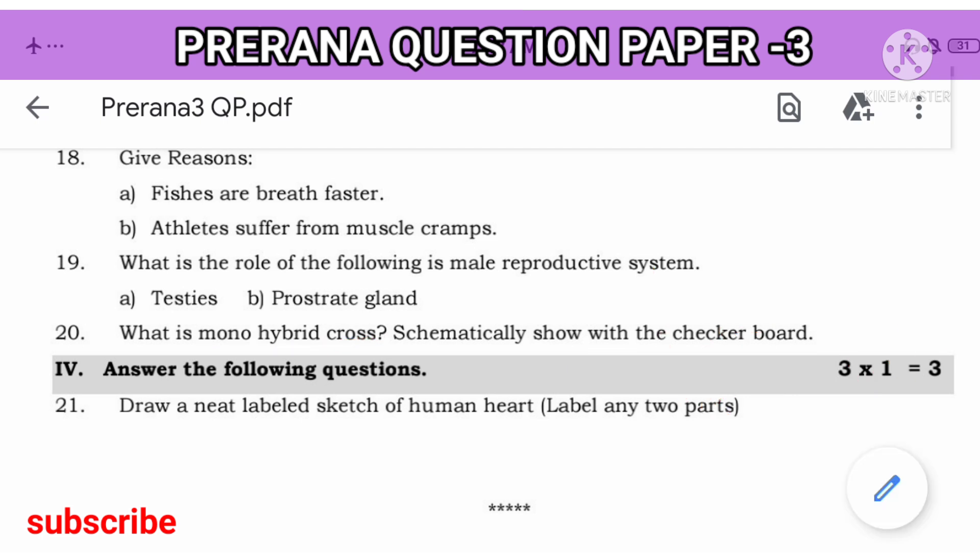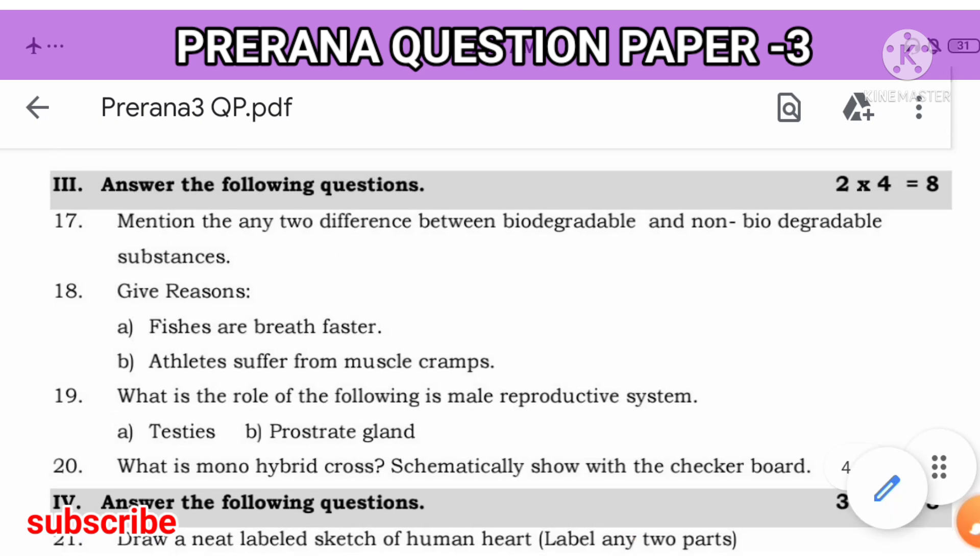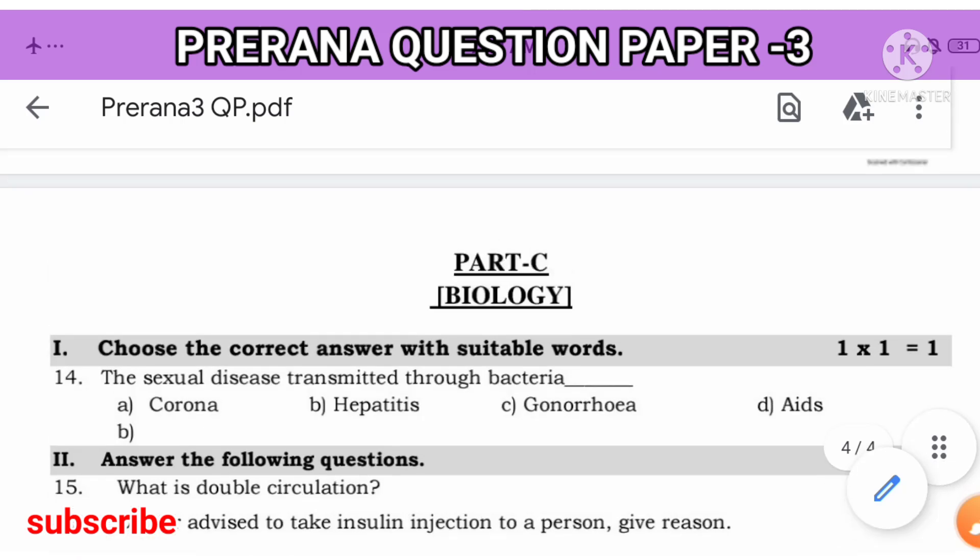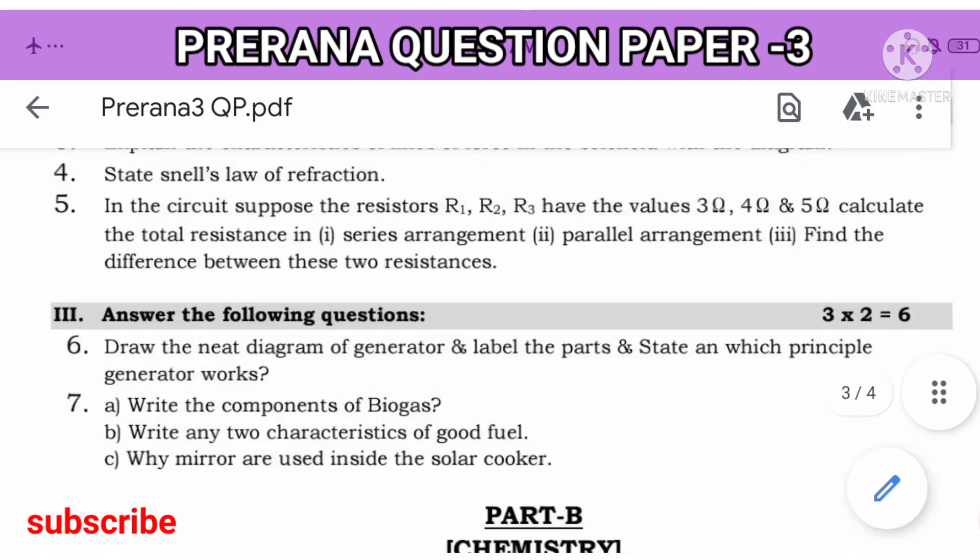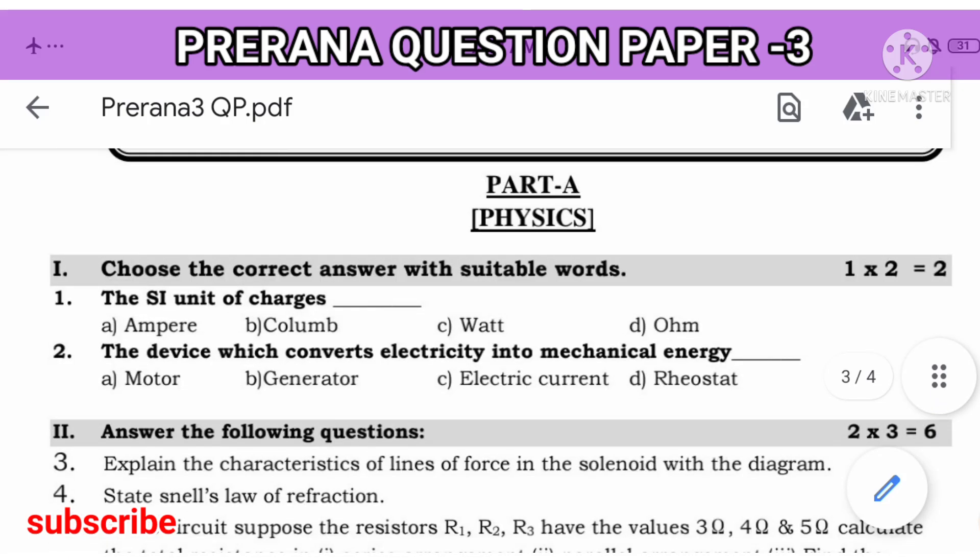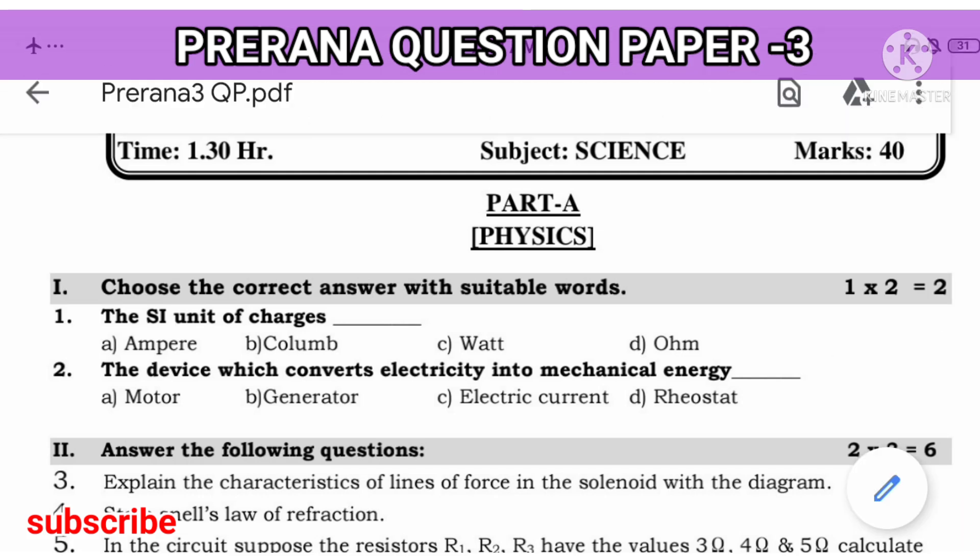Next question: Draw a neat labeled diagram to show the sketch of human heart. Label any two part. How to easily draw human heart, already I have told you. It's very important. Please note down all the important points which I told in this particular session. Solve all three Prerana papers, definitely, along with model papers and the preparatory papers. For those who feel science is difficult, minimum to maximum 35 to 40 marks you will get.